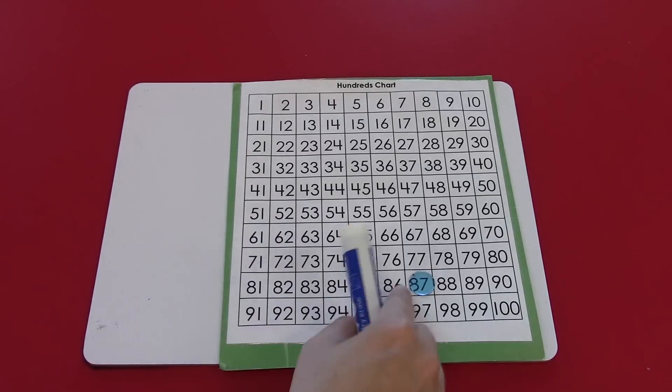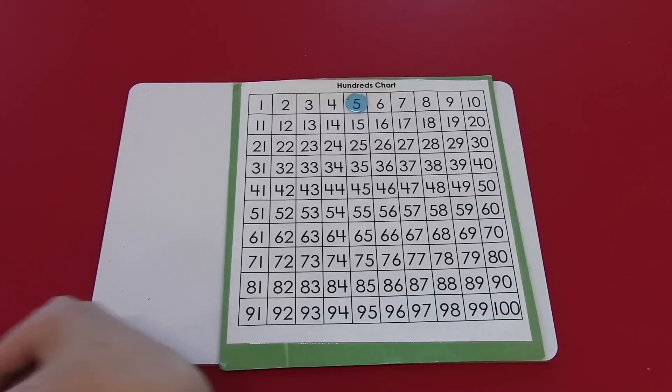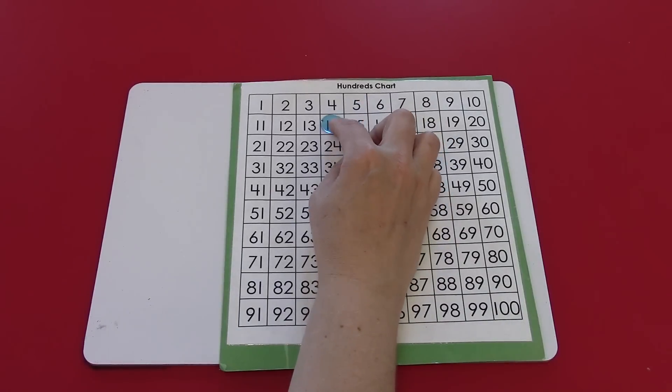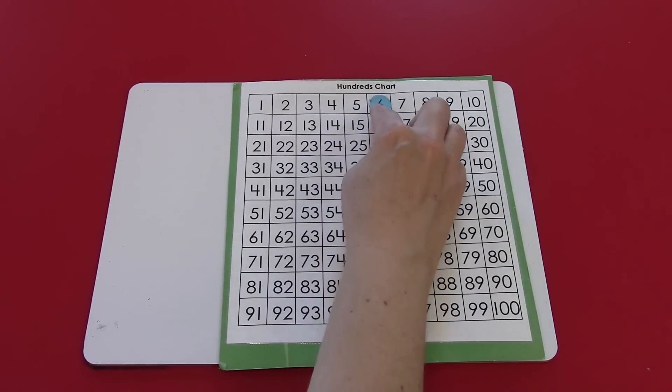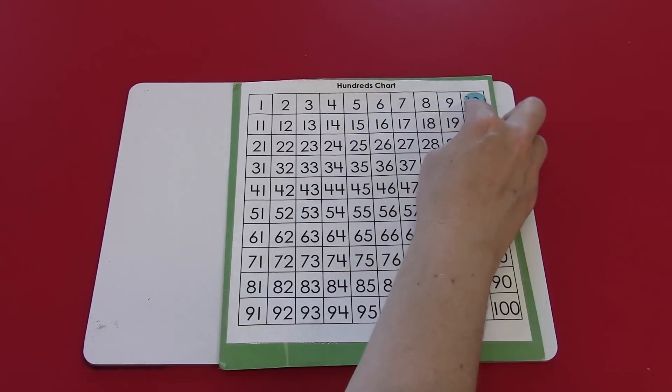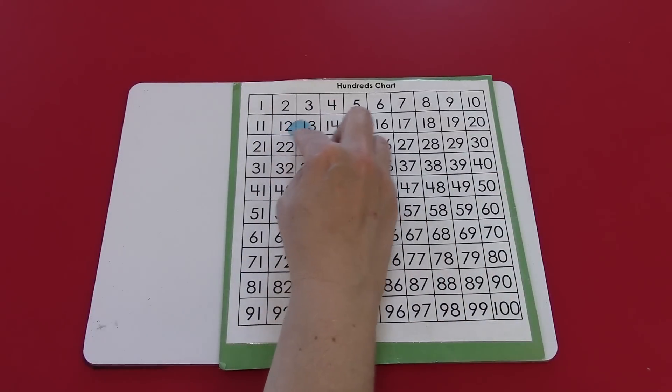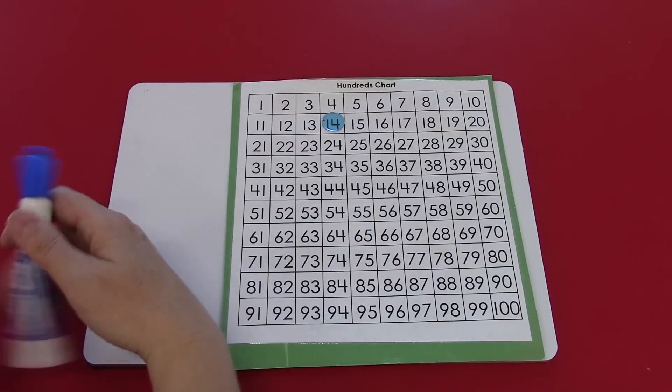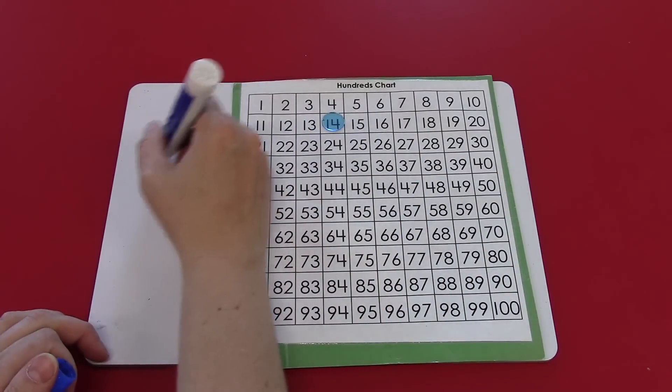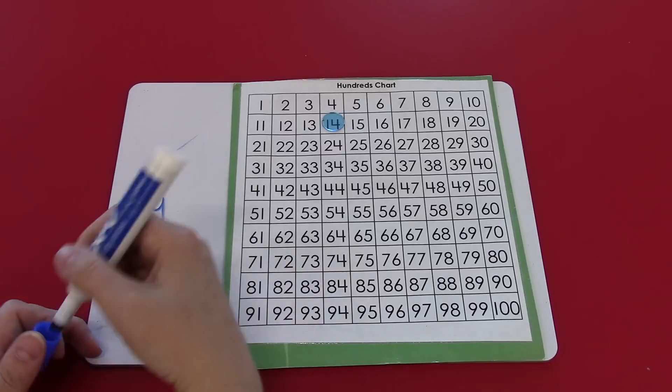The other diagonal, the diagonal to the left, let's see how many more that is. So if I went from 5 to 14, that would be 1, 2, 3, 4, 5, 6, 7, 8, 9. Diagonally to the left, I can add 9.